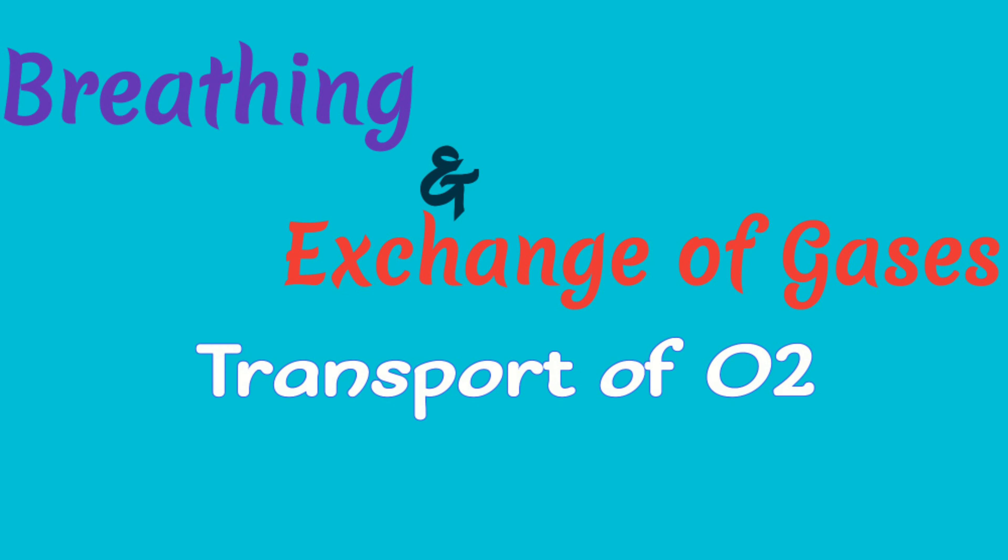Transport of gases. How the oxygen is carried out from the lungs to the tissues and the carbon dioxide from the tissues to the lungs. About 97% of the oxygen is transported through RBC from lungs to the tissues in the form of oxyhemoglobin. The remaining 3% of the oxygen is carried out in the dissolved state through plasma.